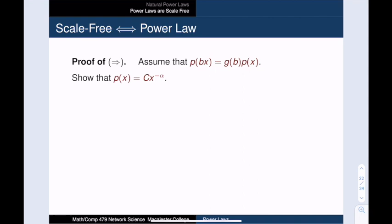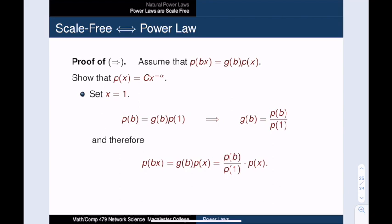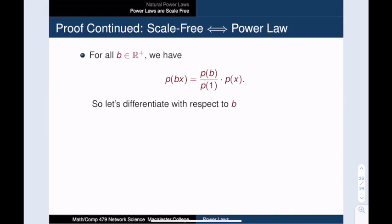Now let's tackle the other direction, and this takes a little longer. We assume that our distribution p has the scale-free property, and we have to show that p is in fact a power law. We start by taking x = 1, and this gives us the value of g(b). It is just p(b) divided by p(1). So now we can write our scale-free equation as p(bx) = [p(b)/p(1)]p(x). We've gotten rid of the function g, and that's progress.